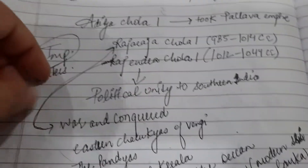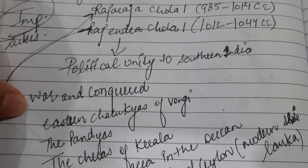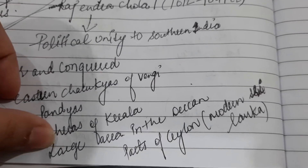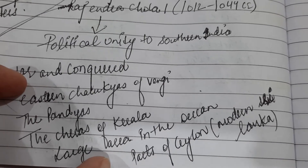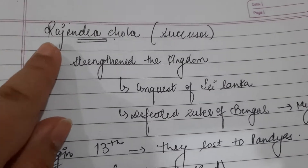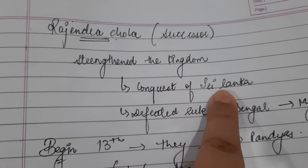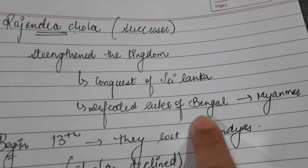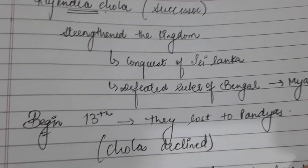Raja Raja Chola's strategy was war and conquest - fight and win. He conquered the eastern Chalukyas of Vengi, the Pandyas, the Cheras of Kerala, a large area in the Deccan, and parts of Ceylon, modern Sri Lanka. He won all those battles and the Chola empire became much stronger. Rajendra Chola was Raja Raja Chola's successor and he further strengthened the kingdom. He completed the conquest of all of Sri Lanka, defeated the rulers of Bengal, and even sent his army as far as Myanmar. He was very brave.